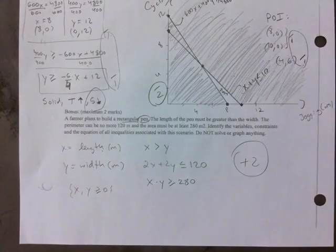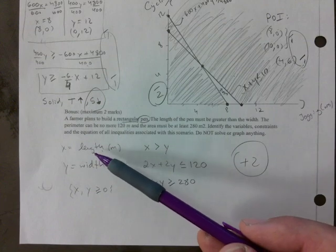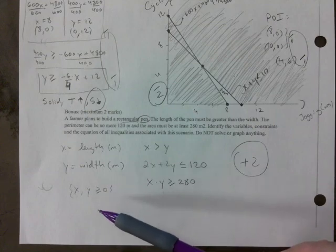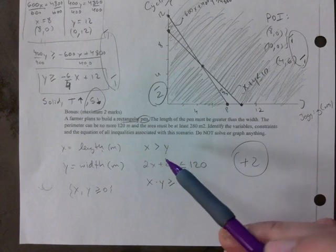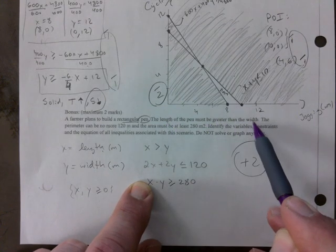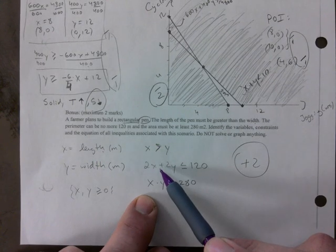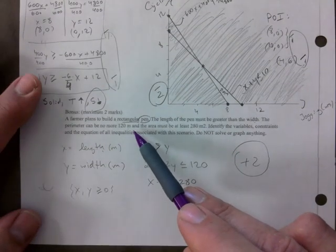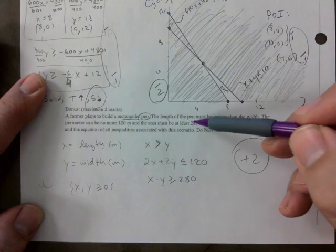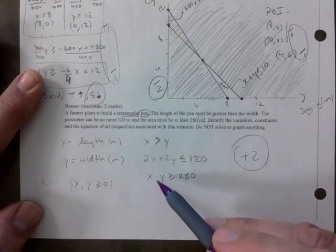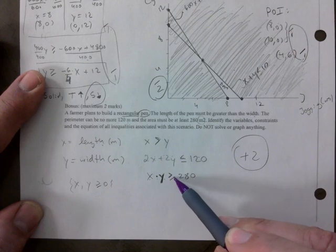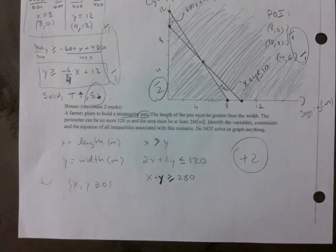And if you want the bonus, this is what it is. So this is rectangular, for length and width. So x and y represent length and width in meters. Both of them have to be positive, of course. And it says that the length must be greater than the width. So length has to be greater than the width. And it says two, the perimeter can be no more than 120 meters. So this is your perimeter. 2x plus 2y has to be less than or equal to 120. And the area must be at least 280 square meters. Sorry about the typo there. So x times y, you've not seen that one, have you? x times y, that's the area, has to be greater than or equal to 280. So if you want the two bonus marks, you have to have all of those things there.